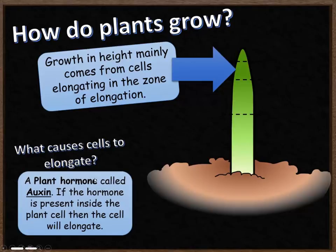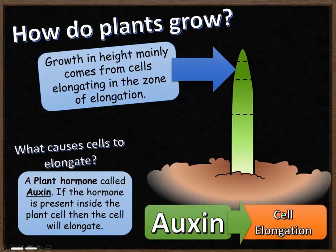So what causes these cells to elongate? It's a plant hormone called auxin. If the hormone is present inside the plant cell, then the cell is going to elongate and grow longer. Auxin causes cells to elongate. Without auxin, the cells don't elongate as much.